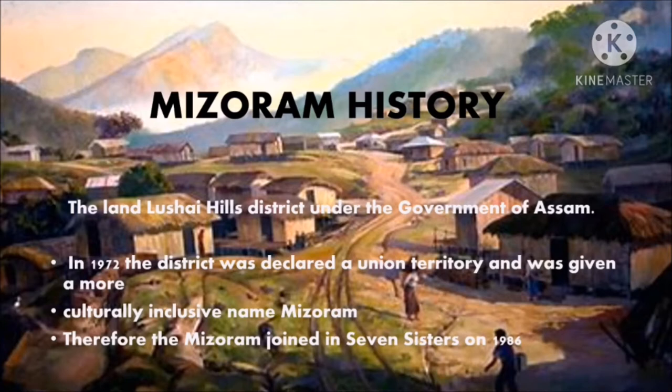History of Mizoram: After Indian independence from the British Empire in 1947, the land became the Lushai Hills District under the government of Assam. Like several other northeastern states of India, Lushai Hills was previously part of Assam until 1972, when it became the 23rd state of India and was named Mizoram. In 1986, Mizoram joined the Seven Sisters.